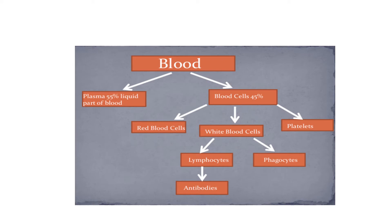Plasma is the liquid part of the blood. It consists of water and salt, and also contains other small molecules including vitamins, minerals, and waste products. Plasma is known to be yellow in color due to the proteins that are dissolved into it.